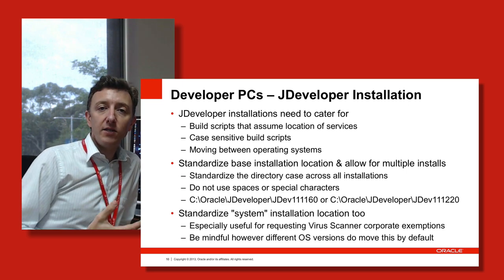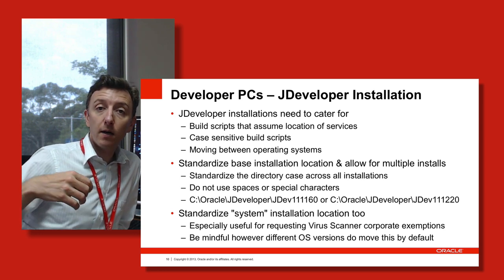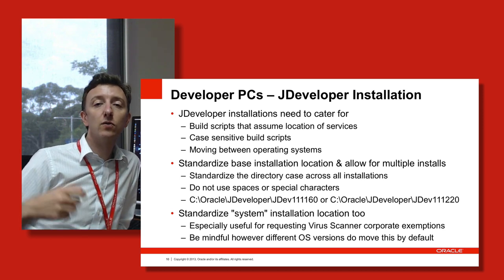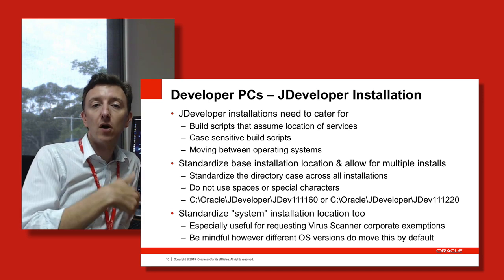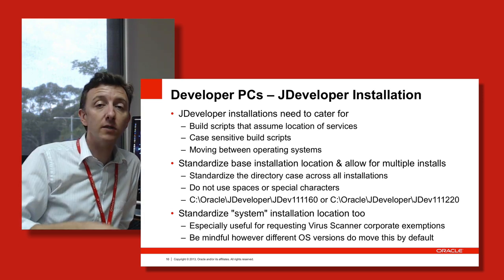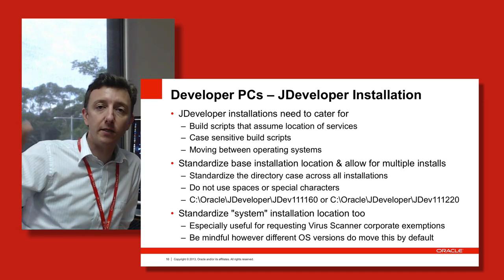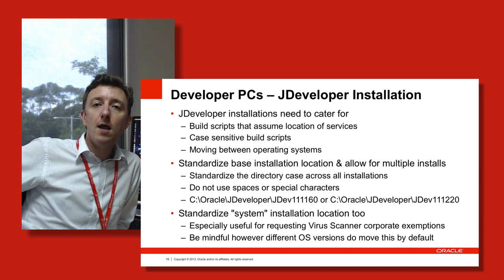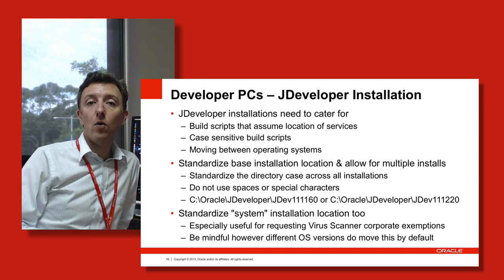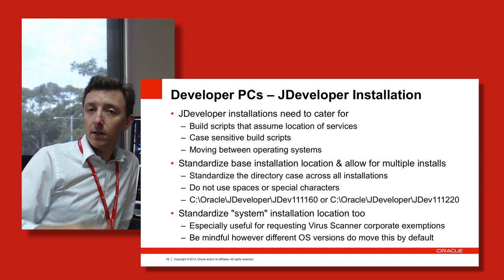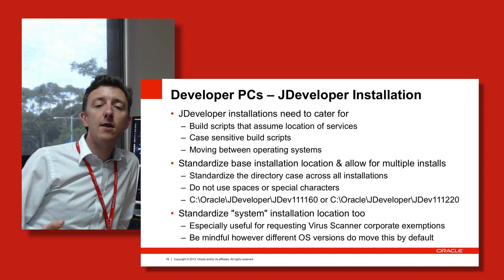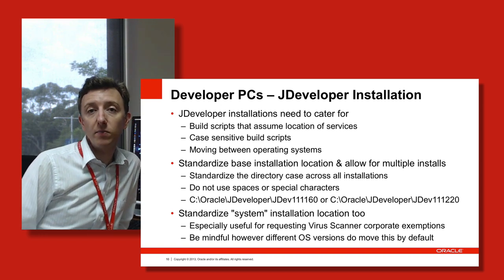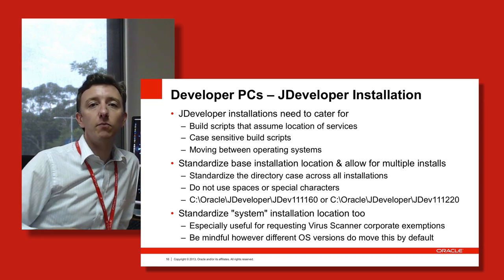JDeveloper also stores a system directory behind the scenes — on a Windows machine, under C:\Users\[username]\AppData and then a JDeveloper system folder, though the exact path depends on the Windows version. Depending on your organization's machine setup, that location might vary, but you need to standardize that location as well. Why? Because the virus scanner will attempt to scan that particular directory, so you need to know where it is so you can put the right exemptions in place.